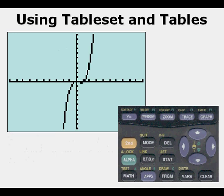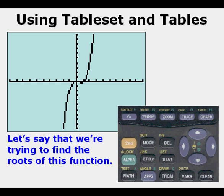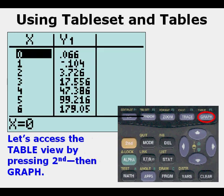Now let's look at this function—it's pretty congested. We're going to go to the table view and press second table. We're looking for roots or solutions but we don't see any here. We're looking for y values of zero.